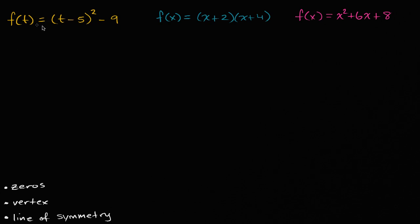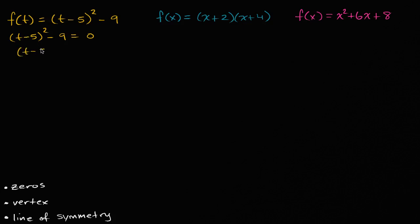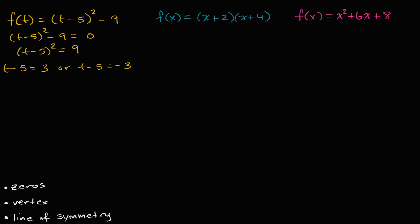Let's first find the zeros. To find the zeros, we set (t - 5)² - 9 equal to zero. To solve this, we add nine to both sides, giving us (t - 5)² = 9. That means t - 5 could equal the positive square root of nine, or t - 5 could equal the negative square root of nine. Adding five to both sides, we get t = 8 or t = 2.